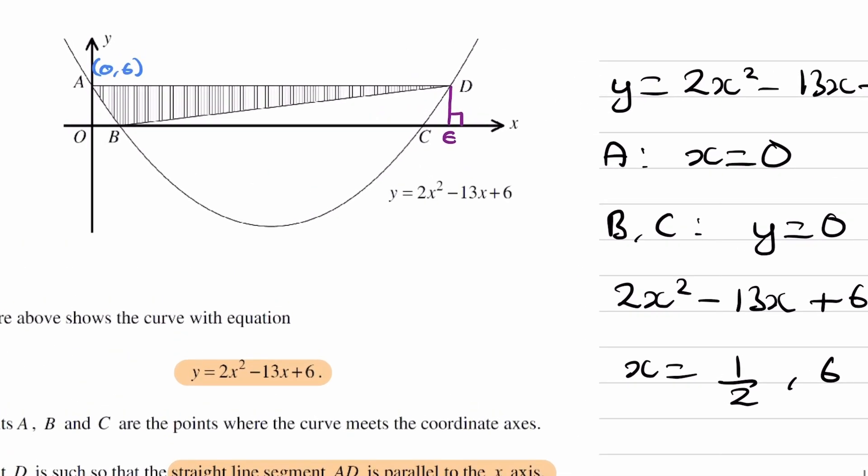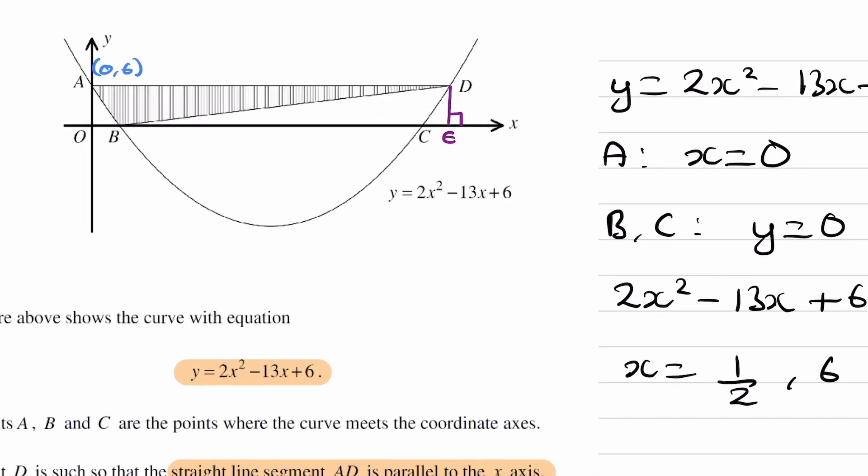So a half would be this point here. Point B is a half, 0. Point C would be 6, 0.